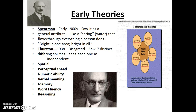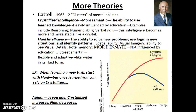Perceptual speed is how quickly you can remember and understand things. Numeric ability is basically math. Verbal meaning would be akin to the ACT. Memory. Word fluency — can you create language? And reasoning or logic was the last component in Thurston's theory.